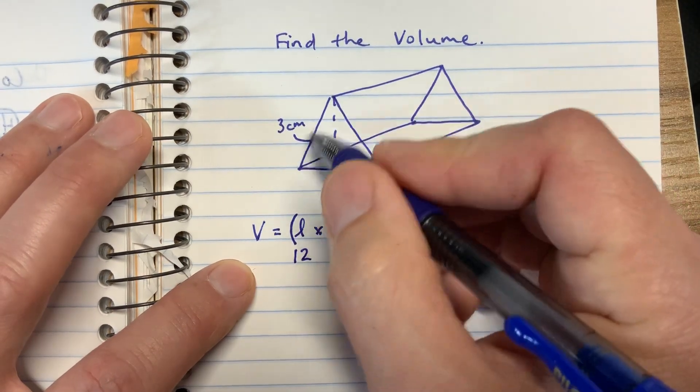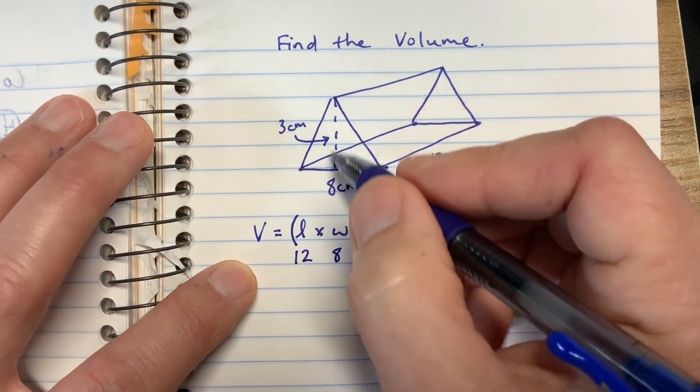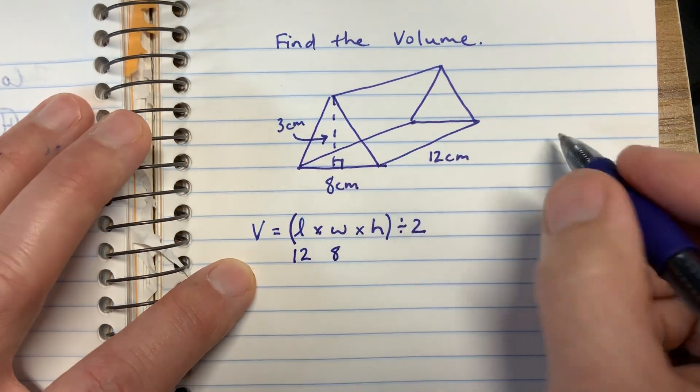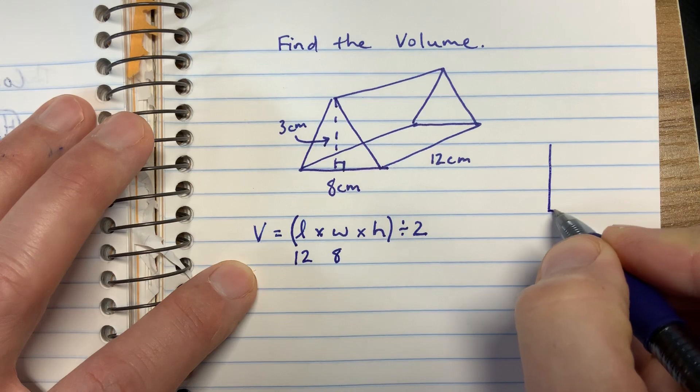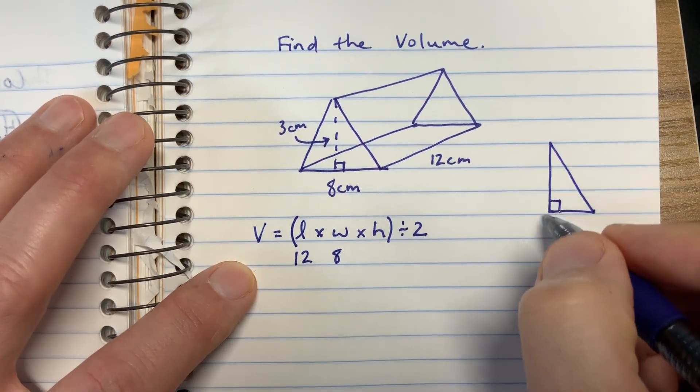And the height, remember, is not necessarily the side of the triangle, but it's a vertical line going from the top to the bottom of the triangle. Sometimes, if a triangle is a right triangle, the side of the triangle is the height, because it's a vertical line.